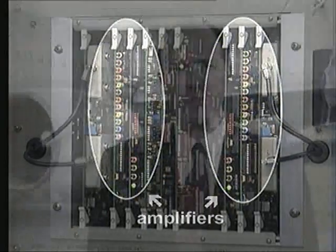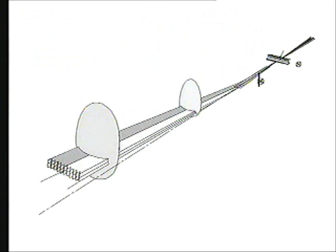Historically, we've been led to understand that both the electronic localiser and glide slope signals form narrow, tightly focused beams which the aircraft receiver sensed. The actual signal pattern is, as you will see, rather different.